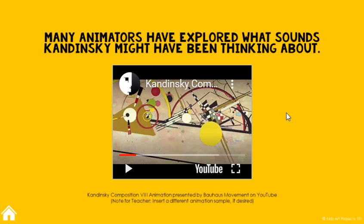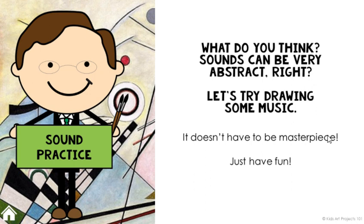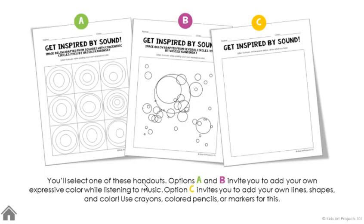Once you give kids a quick peek at some of that animation and help build that connection between sound and visual thinking, you're going to let them try to draw as they listen. You're going to pick something to listen to — I recommend instrumental music — and you're going to present these three handouts and let them choose one.